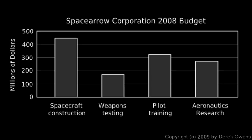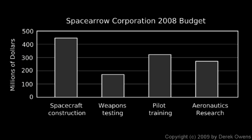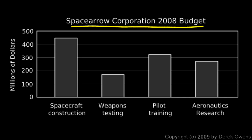Now when you create a bar graph, note that the scale doesn't have to be single units, and that's what we see here. Over here, this is marked off by the hundreds — but it's not just hundreds, this is in millions of dollars. So each line on this graph represents a hundred million dollars. This is a graph of a budget for a company called Space Aero Corporation — the Space Aero Corporation 2008 budget.